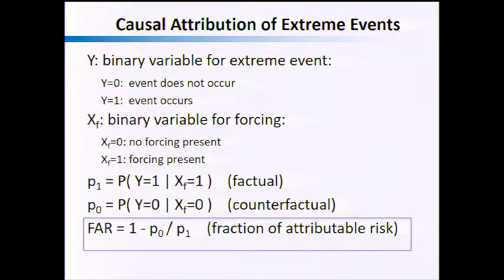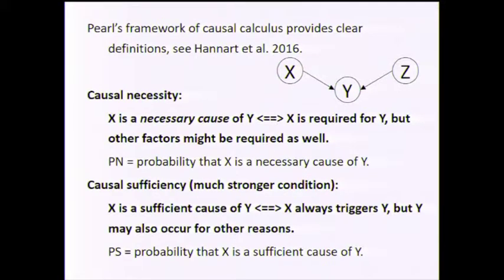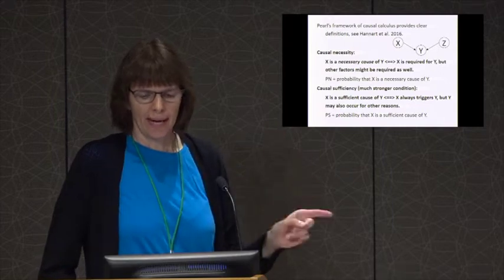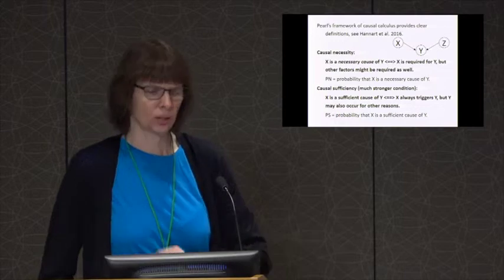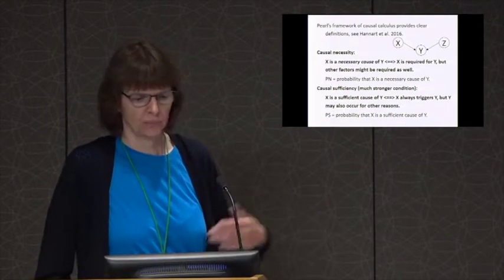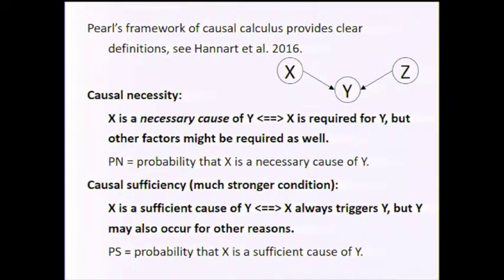That works fine for two variables, but people have criticized this framework: what does it mean if there's another variable z that also has influence on y? If you use Pearl's causality network you can define it very concisely, and that's exactly what Alexis did in his paper. They define causal necessity and causal sufficiency. Causal necessity: x is a necessary cause of y if and only if x is required for y to happen, but other factors might also be required. Basically, if I don't have x, y doesn't happen; if I do have x, y might or might not happen. PN is the probability that x is a necessary cause of y.